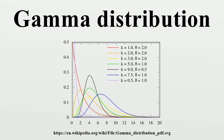For example, the Marsaglia-Tsang simple transformation-rejection method relies on 1 normal and 1 uniform random number. Setup: d = α − 1/3, c = 1/√(9d). Generate V = (1 + cX)³ with X standard normal. If V > 0 and ln(U) < 0.5·X² + d − d·V + d·ln(V), return d·V. This generates a gamma distributed random number in approximately constant time with respect to k. The acceptance rate depends on k, with rates of 0.95, 0.98, and 0.99 for k = 1, 2, and 4.